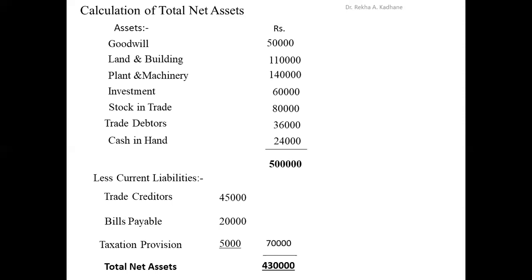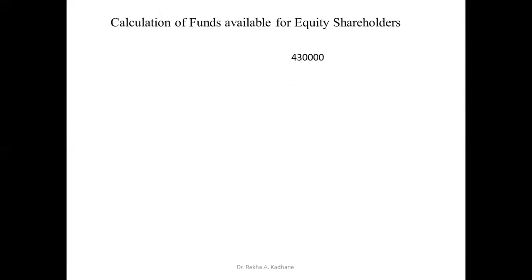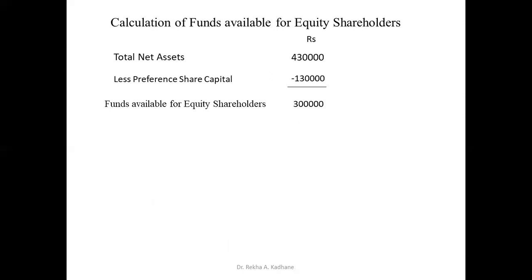From total assets we deduct current liabilities: trade creditors Rs. 45,000, bills payable Rs. 20,000, and taxation provision Rs. 5,000 — total liabilities Rs. 70,000. So Rs. 5,00,000 minus Rs. 70,000 equals Rs. 4,30,000 total net assets. Second step: calculation of fund available for equity shareholders. Total net assets Rs. 4,30,000, less preference share capital Rs. 1,30,000. Fund available for equity shareholders equals Rs. 3,00,000.